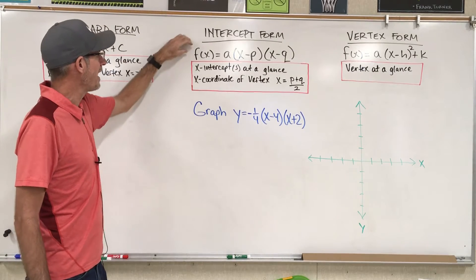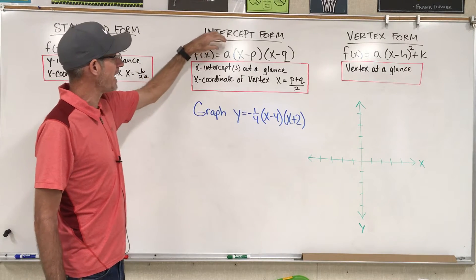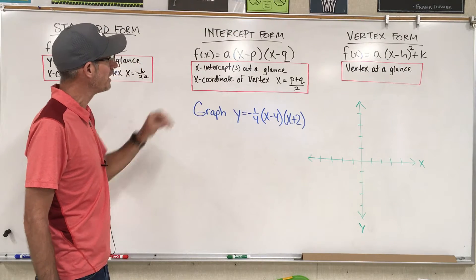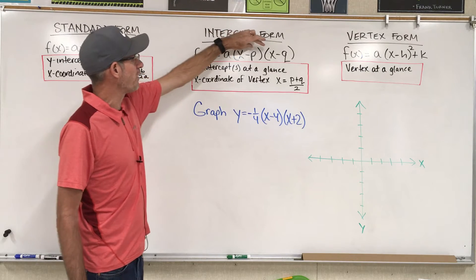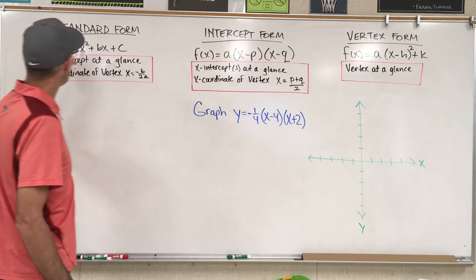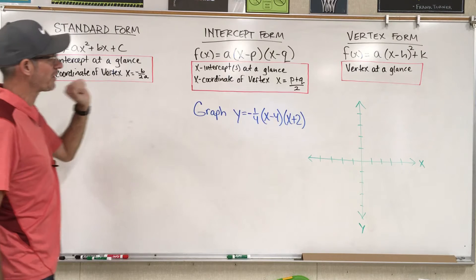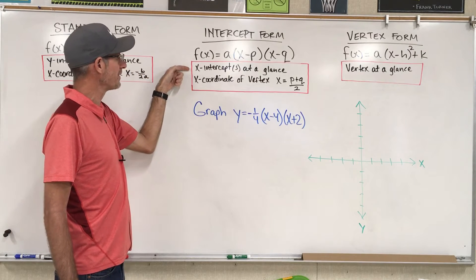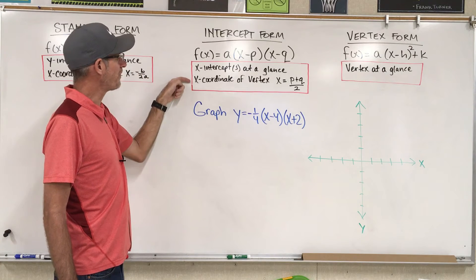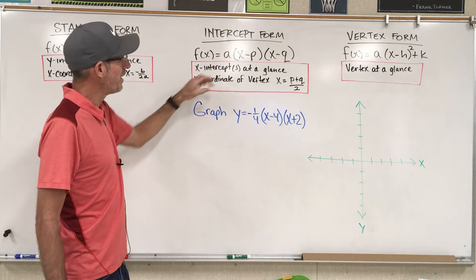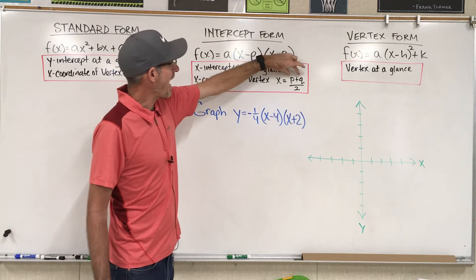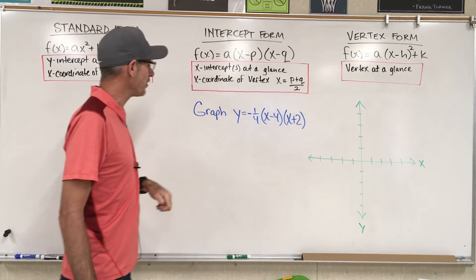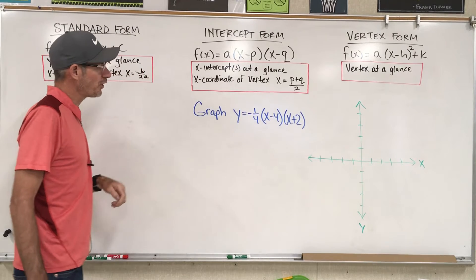Intercept form is f of x equals a times (x minus p) times (x minus q). These are the binomial factors of standard form. You can tell the x-intercepts at a glance, and you can find the x-coordinate of the vertex by adding the two x-intercepts and dividing by 2.